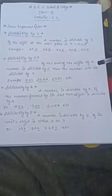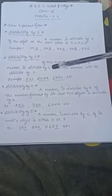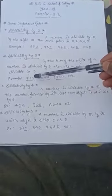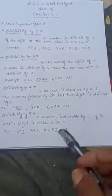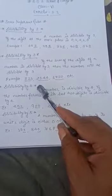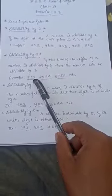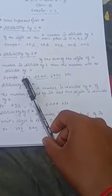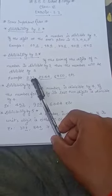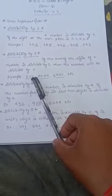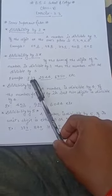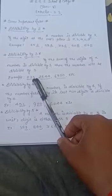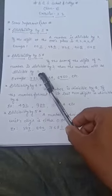Now divisibility by 3: if the sum of the digits of a number is divisible by 3, then the number will be divisible by 3. For example, take the number 723. Seven plus two plus three equals 12, and 12 is divisible by 3. Therefore, 723 is divisible by 3.